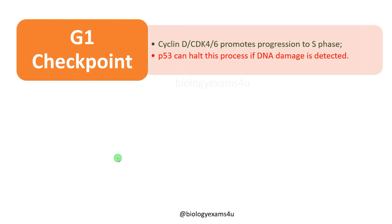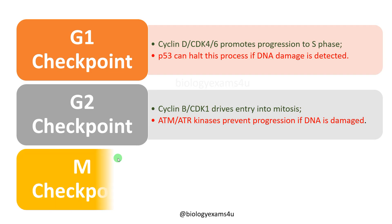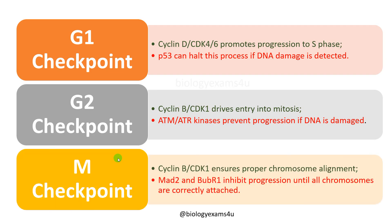Now let me summarize. G1 checkpoint: cyclin D-CDK4/6 complexes promote progression to S phase; p53 can halt this process if DNA damage is detected. G2 checkpoint: cyclin B-CDK1 drives entry into mitosis; ATM-ATR kinases prevent progression if there is DNA damage. M checkpoint: cyclin B-CDK1 ensures proper chromosome alignment; MAD2 and BubR1 inhibit progression until all chromosomes are correctly attached and properly aligned at the metaphase plate.